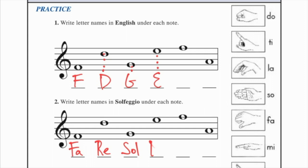Fifth line, every good boy does fine, the letter F, and the solfeggio for F is FA.